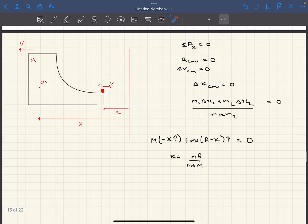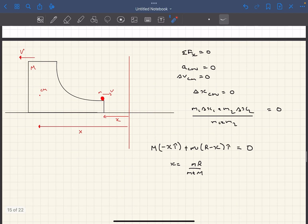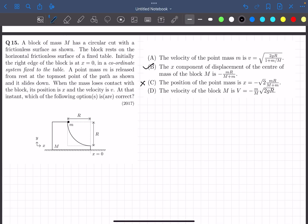And option B, they have asked us about the displacement of the center of mass of the block. And that, as I explained earlier, is simply going to be x, which is MR by small m plus capital M which basically means option B will be correct.